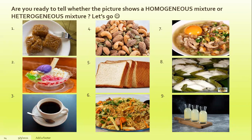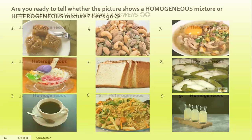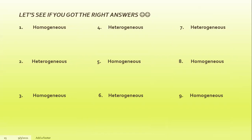Are you ready with your answers? You can exchange answers with a friend or ask somebody to check your paper, or check it by yourself. Number one: homogeneous. Number two: heterogeneous. Number three: homogeneous. Number four: heterogeneous. Number five: homogeneous. Number six: heterogeneous. Number seven: heterogeneous. Number eight: homogeneous. And number nine: homogeneous.